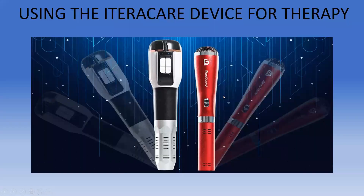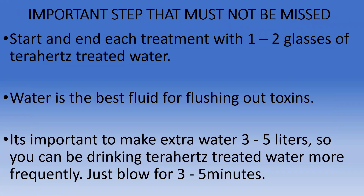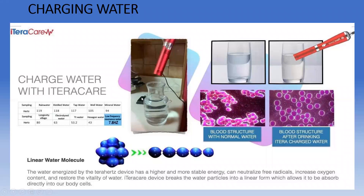Using the device for therapy — here are important steps that must not be missed. You need to start and end each treatment with one to two glasses of terahertz-treated water. Just blow on the glass of water for one minute — that's enough. For a five-liter glass container, blow for two to three minutes and the water is fully charged. Water is the best fluid for flushing out toxins. Make extra water — about three to five liters — so you can drink terahertz-treated water more frequently. The terahertz changes the structure of the water to a linear structure that your body can absorb freely, flushing out toxins and allowing more oxygen in.